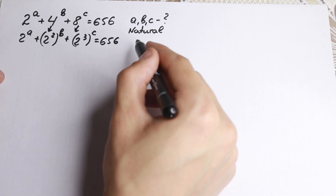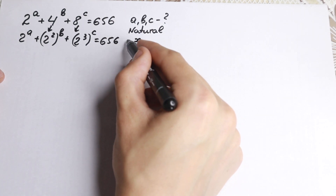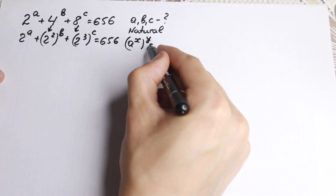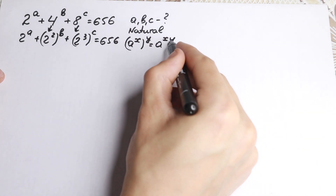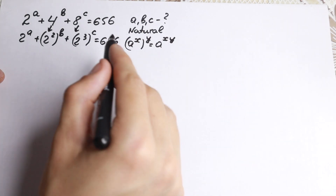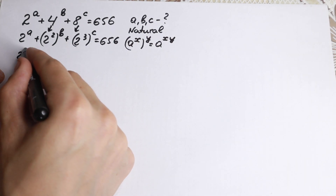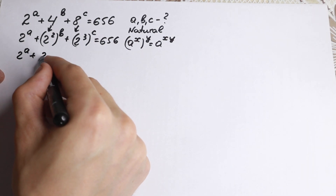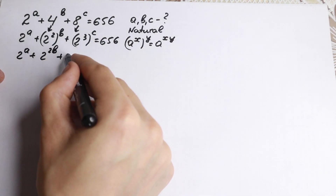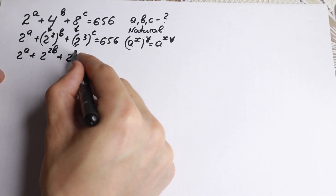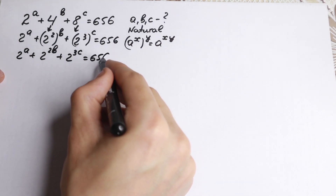We need to use the rule that a to the power x, raised to the power y, equals a to the power x times y. Applying this, we will have 2 to the power a plus 2 to the power 2b plus 2 to the power 3c equal to 656.